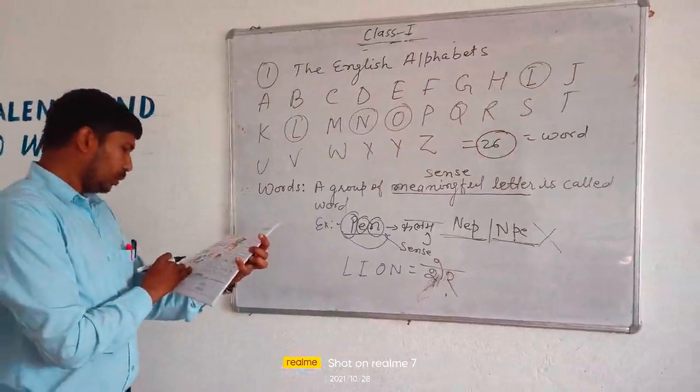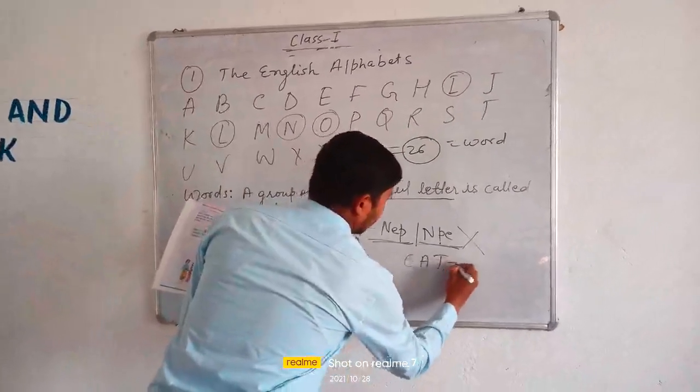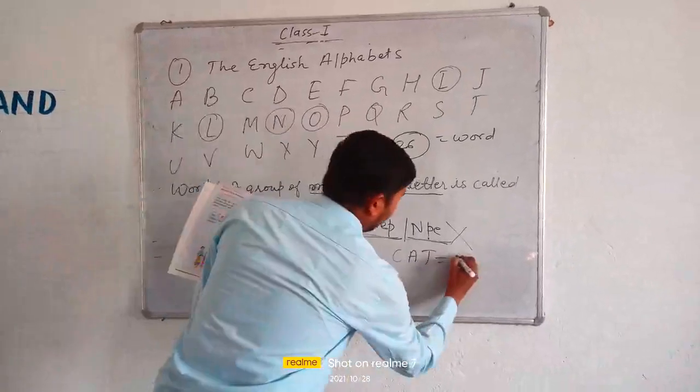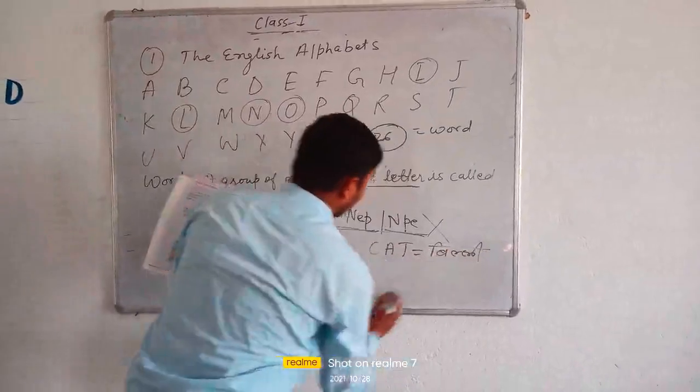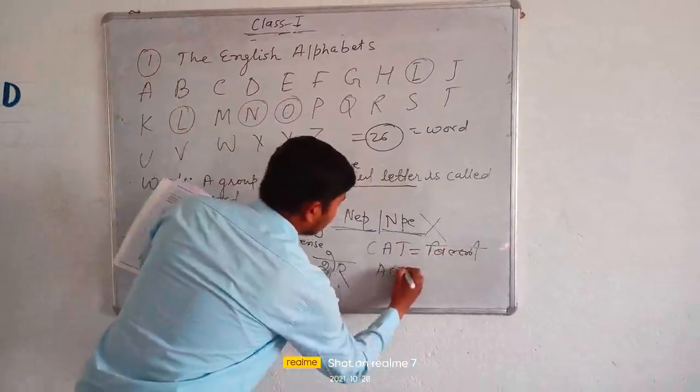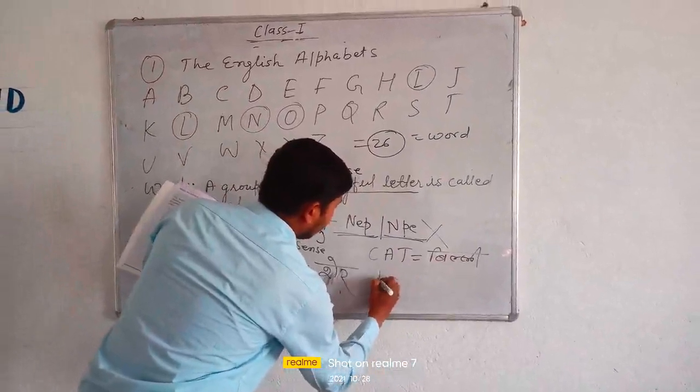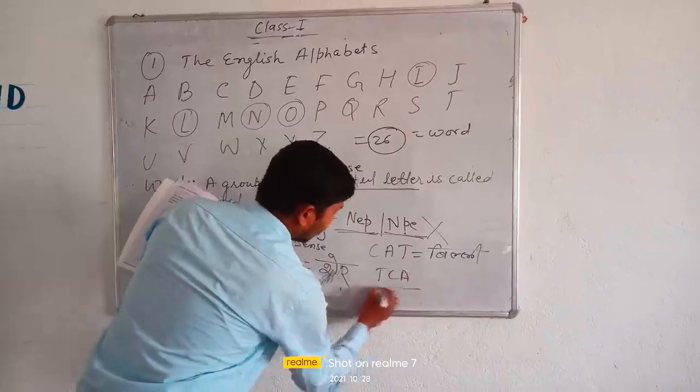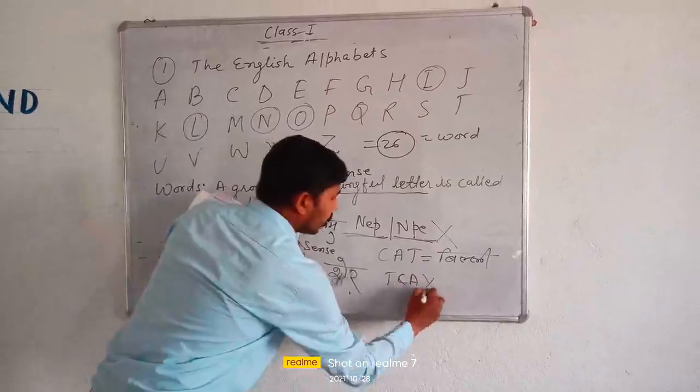If we say C, A, T, what do you mean? Cat. If we say A, C, T, what do you mean? Act. But T, C, A? There is no new word. No.